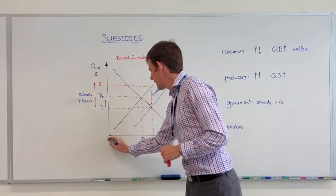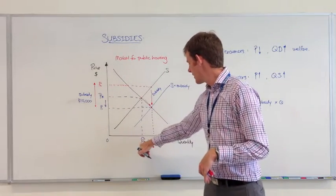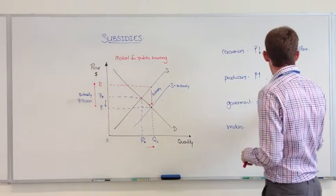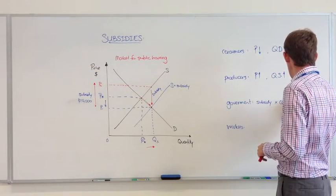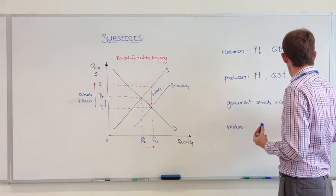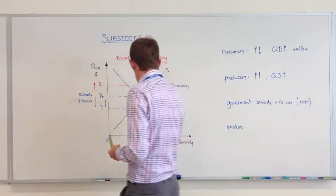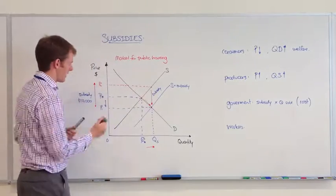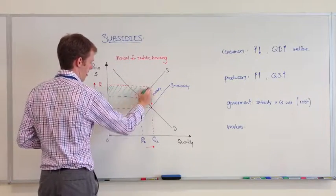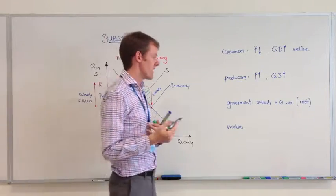But the government has to pay the subsidy times the quantity of houses that the subsidy applies to. So the subsidy is calculated by this amount here, times all the way up to Q1. It's the subsidy times the quantity sold on the market. This is a considerable cost to government, shown as this rather large green rectangle.